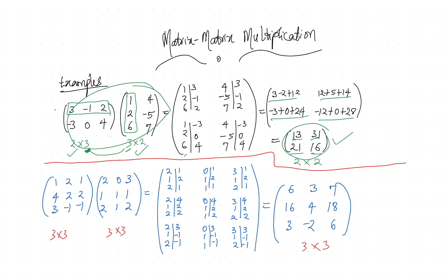Next example: multiplying a 3×3 matrix by another 3×3 matrix. Since the first matrix has three rows, we write each column of the second matrix three times. We write [2, 1, 2] three times, [0, 1, 1] three times, and [3, 1, 2] three times. Then we invert row one [1, 2, 1] over the first group, row two [4, 2, 2] over the second, and row three [3, −1, 1] over the third.